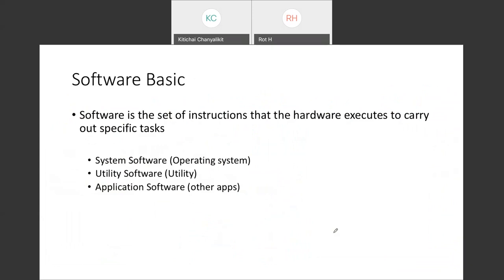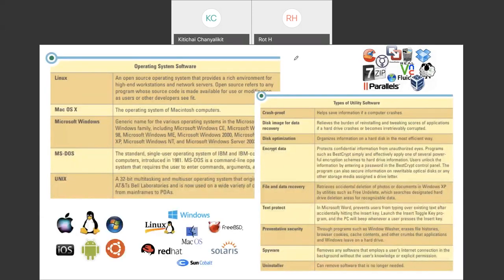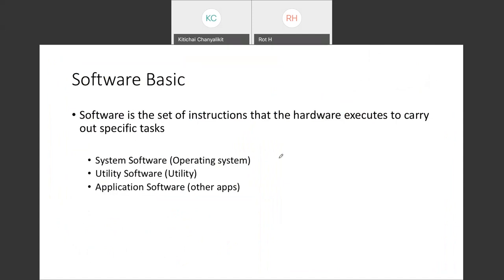Software is a set of instructions that hardware executes to carry out specific tasks. There are three kinds of software: system software, utility software, and application software. System software is the operating system (OS), which controls the hardware, especially the computer itself. Utility software takes care of smaller devices. Application software is for commercial use — for example, Word documents, Excel, and PowerPoint.